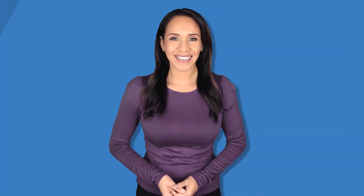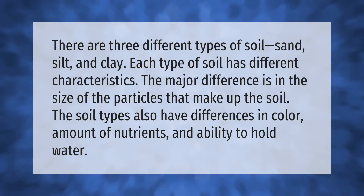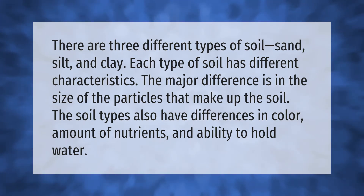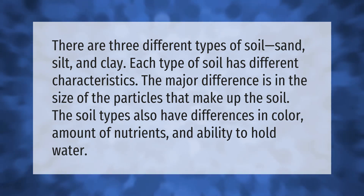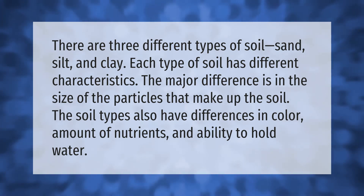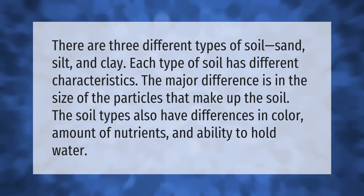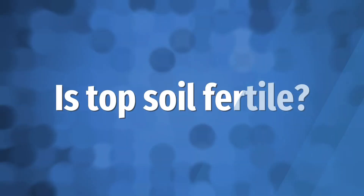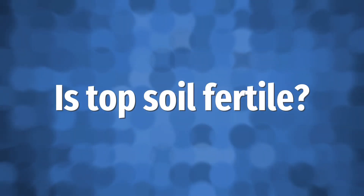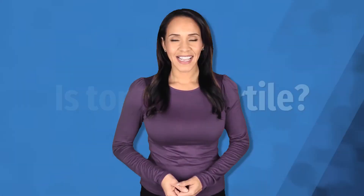There are three different types of soil: sand, silt, and clay. Each type of soil has different characteristics. The major difference is in the size of the particles that make up the soil. The soil types also have differences in color, amount of nutrients, and ability to hold water.